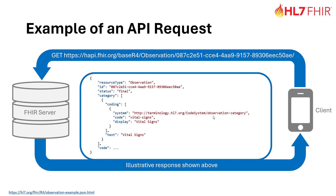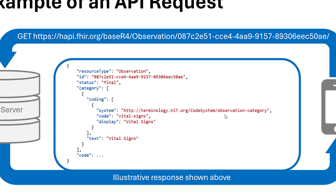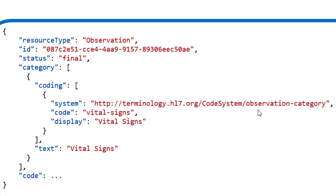That data can either be in XML or in JSON. Most commonly, FHIR uses JSON for exchanging that information, as shown on the slide here. We see that it's a resource type of observation. It has an ID element and its status is final. It also has a category that tells us that this is going to be a vital sign — something like heart rate, blood pressure, or temperature for a patient. Not shown on the screen would also be a lot of other information that tells the specific coding, value, and timing information for this vital sign.